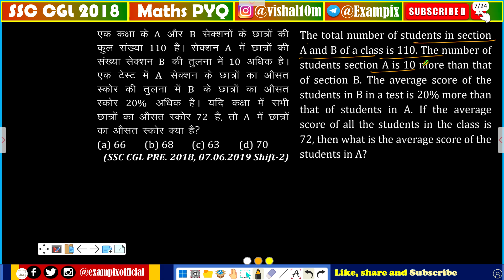The average score of students in B in a test is 20% more than that of students in A. If the average score of students in class is 72, then what is the average score of students in class A?